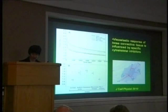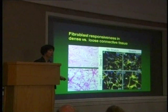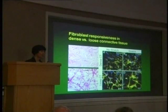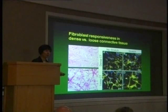Now, remember at the beginning of the talk we were talking about loose and dense connective tissues. One of the things we were wondering is whether this response of the tissue — this sort of tension regulation — is occurring in all types of connective tissues. So far, all the experiments I've shown you have been about loose connective tissue. But if you look in dense connective tissue, such as the actual fascia matrix around the muscles, this does not occur.